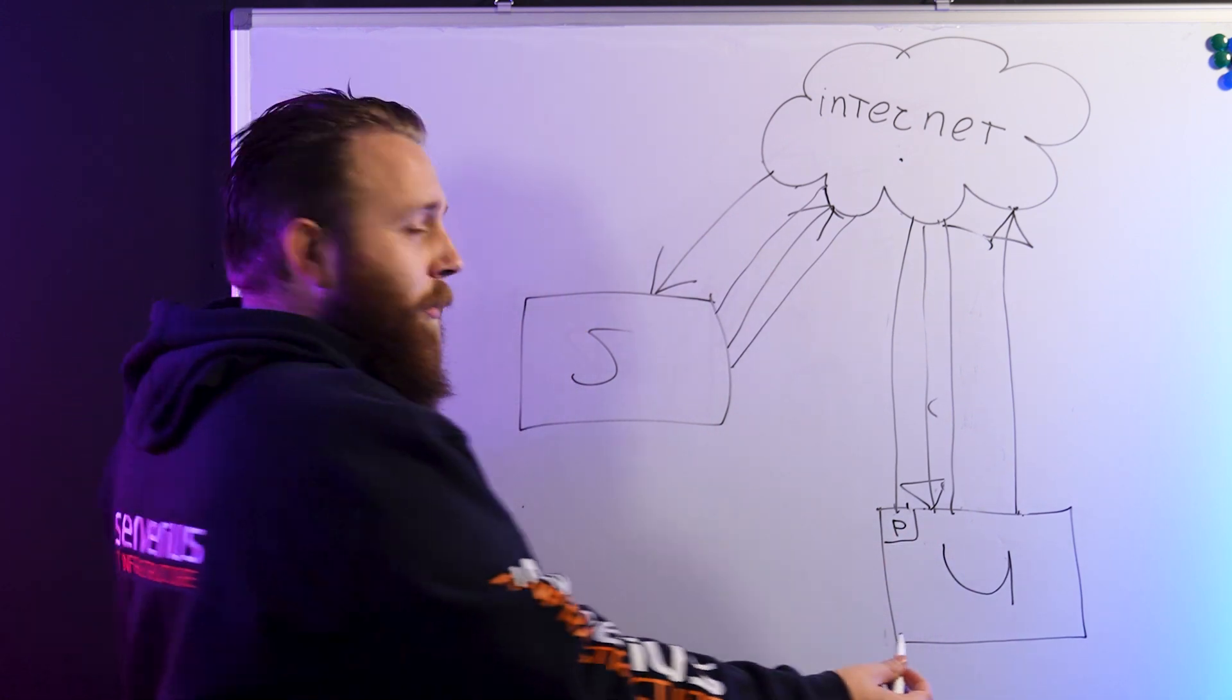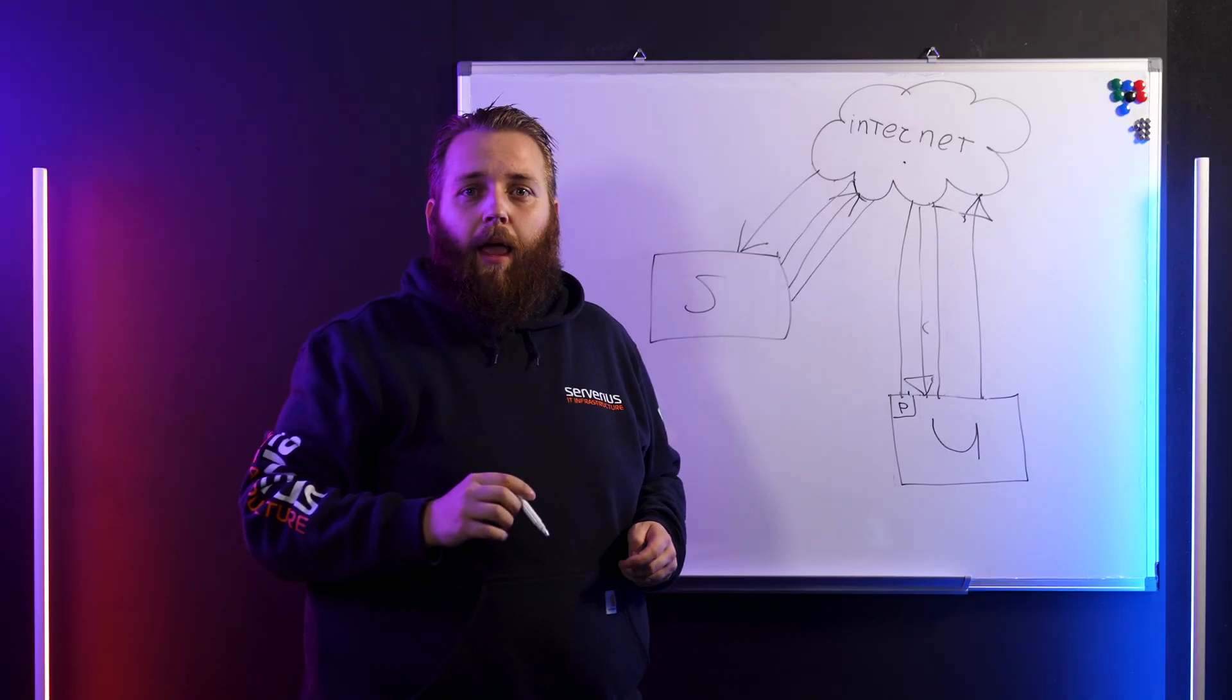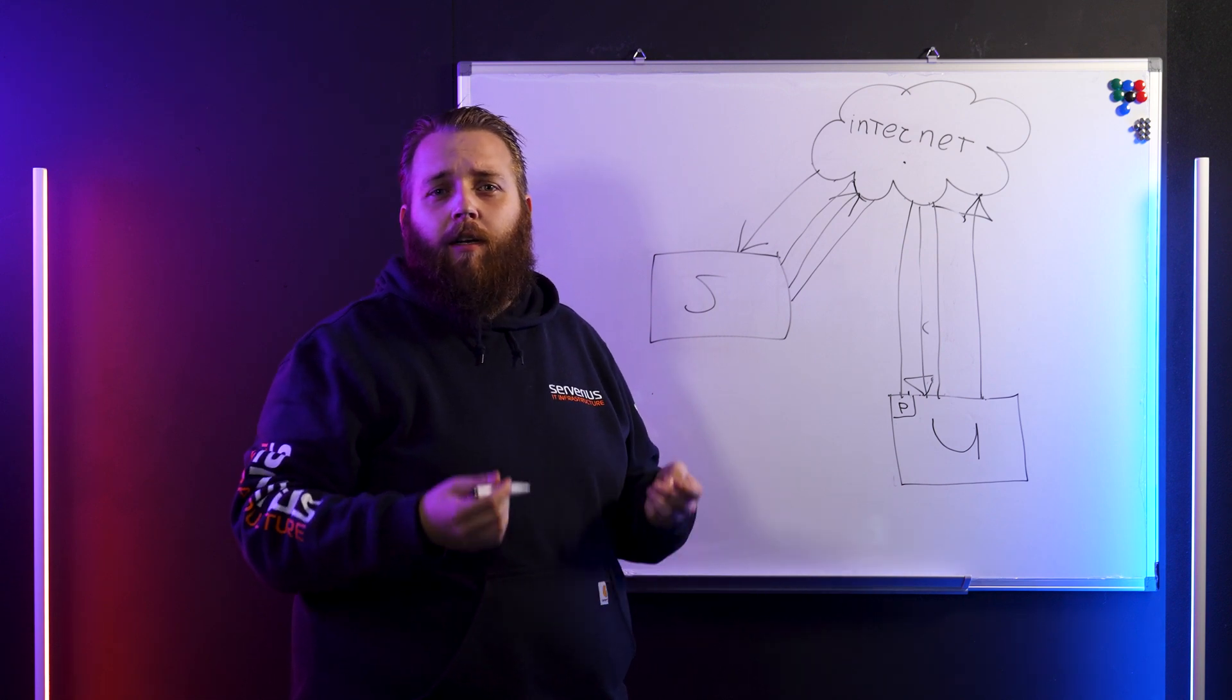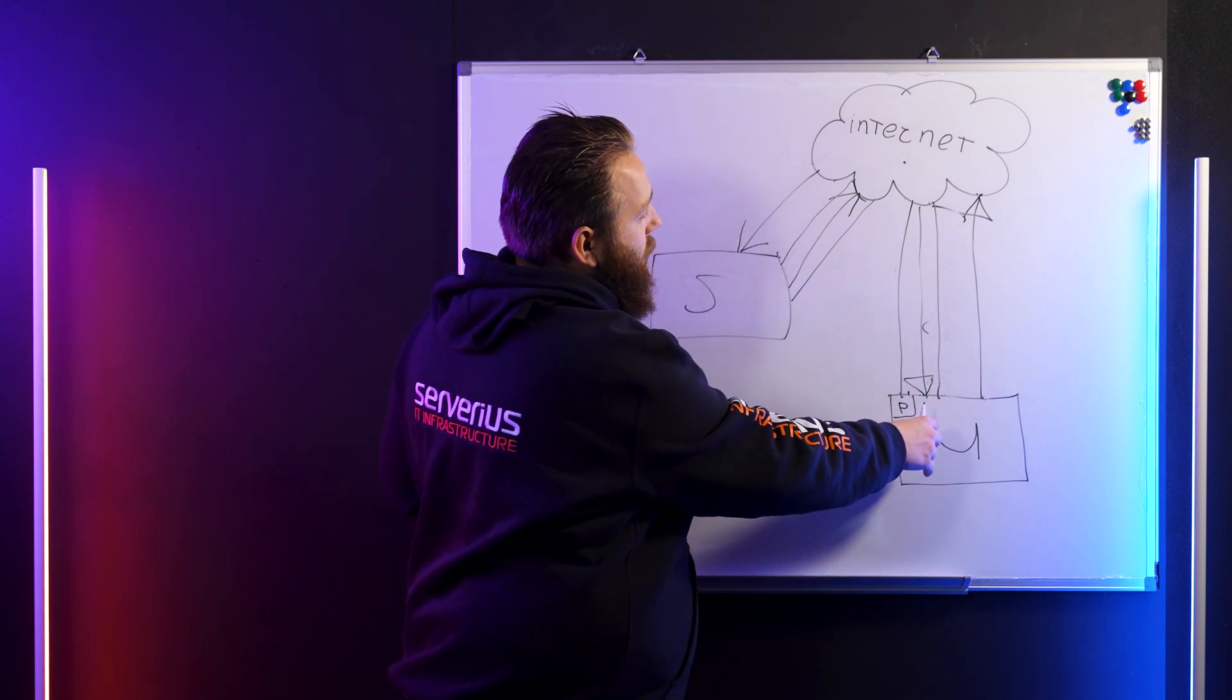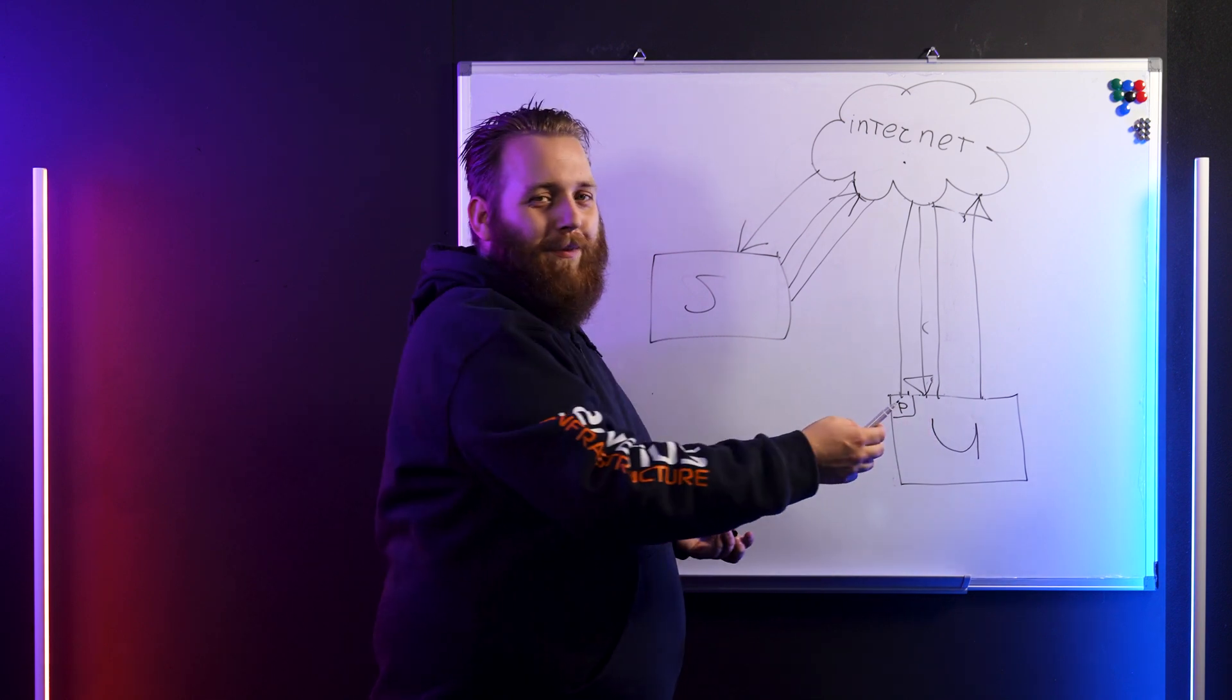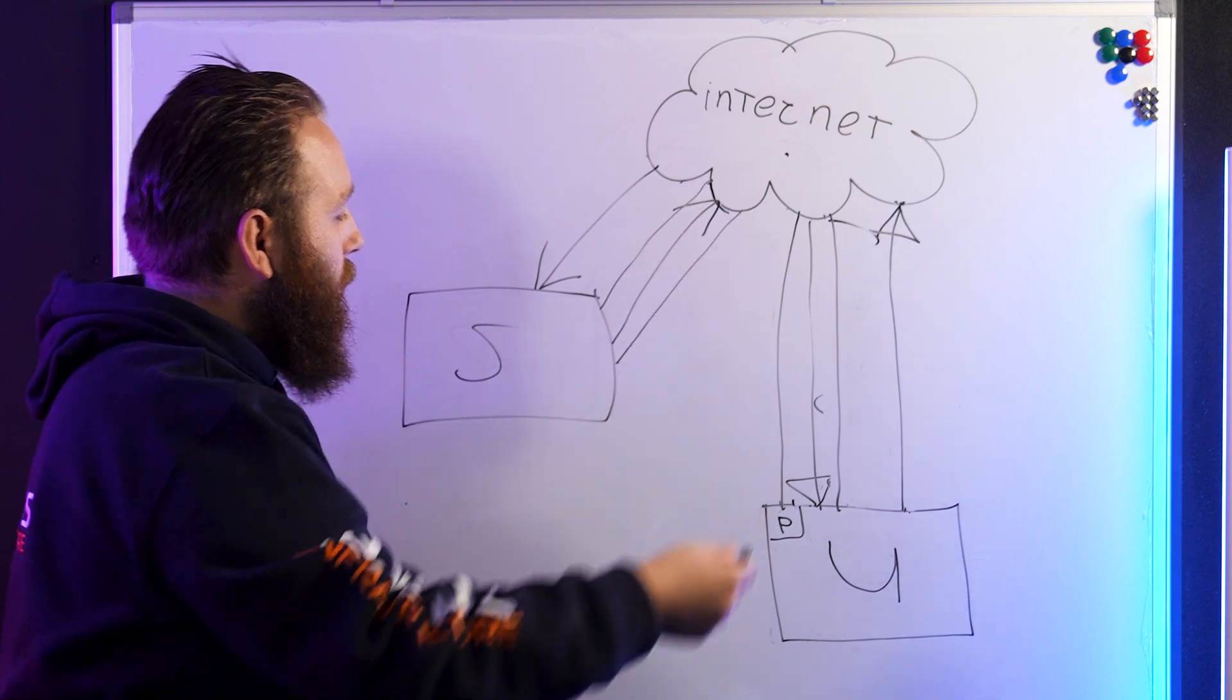So the internet would work the normal way. You're just connected to the internet via your local ISP. And when the Out of Path solution detects that you're being attacked, you automatically start announcing your subnets through the GRE tunnel. So we can filter all your traffic again.